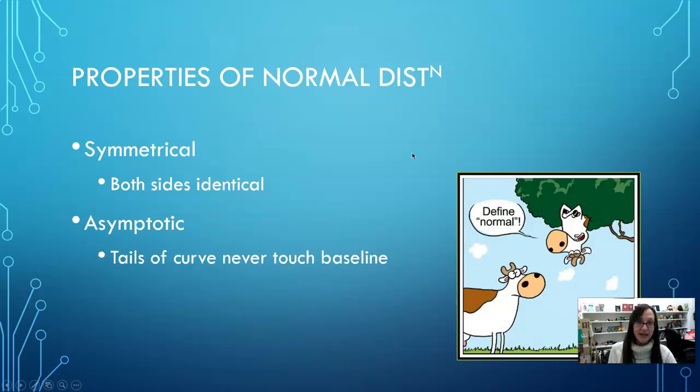Also, that middle line — if it's a normal distribution — means the mean, median, and mode would all be the same value. Just keep that in mind.